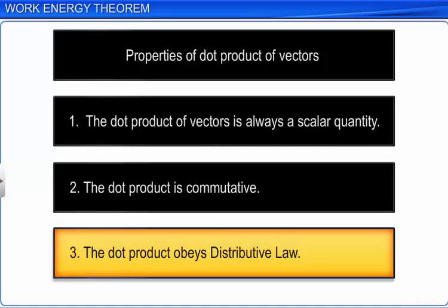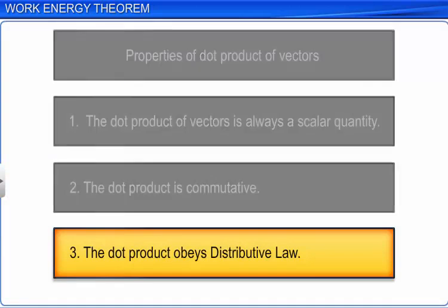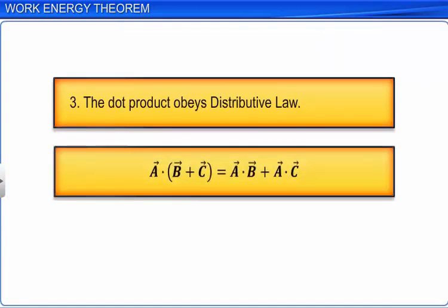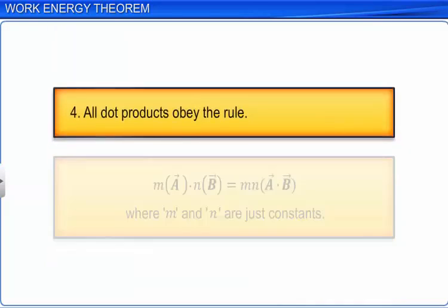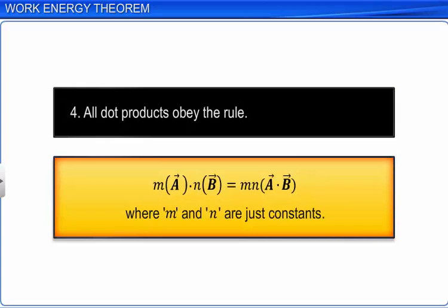The dot product obeys the distributive law. So A dot (B + C) is equal to A dot B plus A dot C. All dot products also obey the rule: M times A dot N times B is equal to MN times A dot B, where M and N are constants.